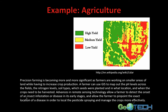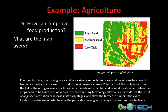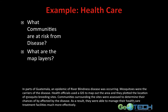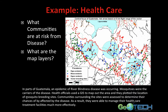In agriculture, the question is how can we improve food production, and we identify the map layers needed to solve that. In healthcare, the question was: what communities are at risk from disease? A Guatemalan epidemic of river blindness disease illustrates this — mosquitoes were the carriers, and health officials used GIS to map mosquito breeding sites. Communities surrounding the sites were assessed to determine their chances of being affected, and as a result they were able to manage healthcare treatment facilities much more effectively.